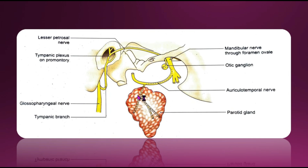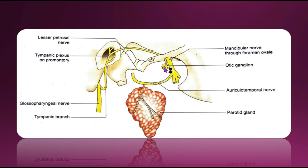The nerve supply of the parotid gland includes parasympathetic, sympathetic, and sensory nerves. The parasympathetic nerves are secretomotor and reach the gland through the auriculotemporal nerve. The preganglionic fibers begin in the inferior salivatory nucleus, passing through the glossopharyngeal nerve, its tympanic branch, the tympanic plexus, and the lesser petrosal nerve, relaying in the otic ganglion. The postganglionic fibers pass through the auriculotemporal nerve to reach the gland.